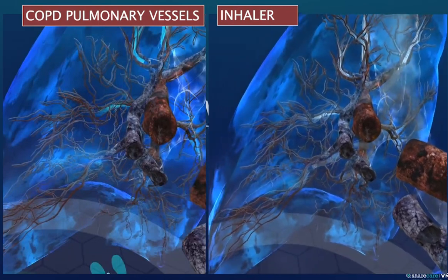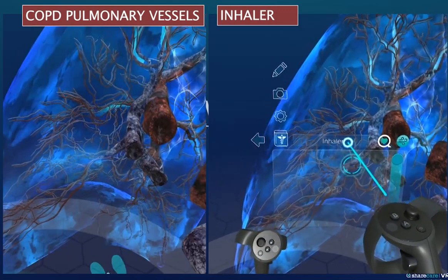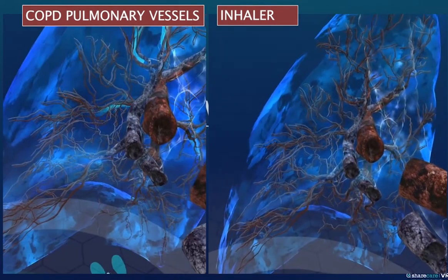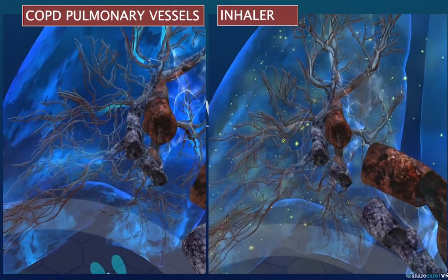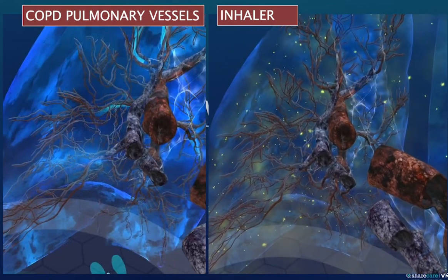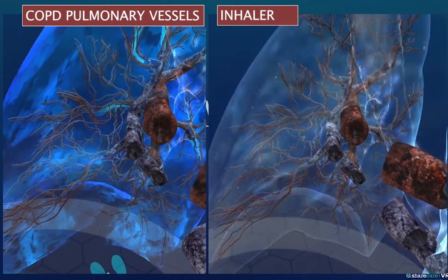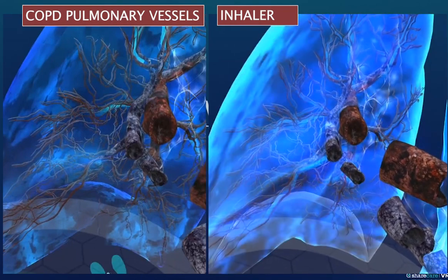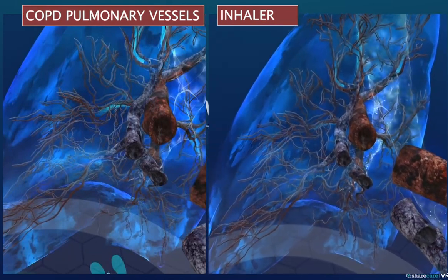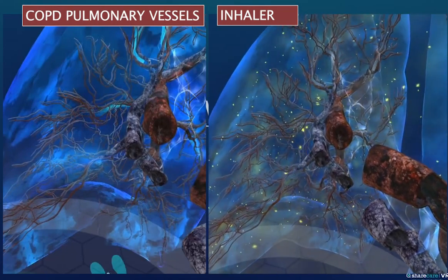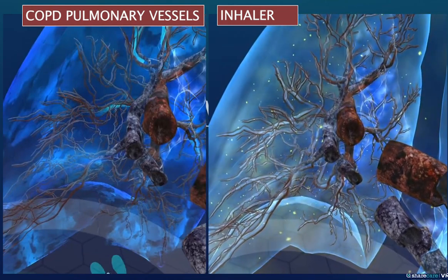Moving on to look at the effects an inhaler might have on the macroscopic anatomy and physiological processes associated with gas exchange and airflow: in many patients with COPD pharmacological therapy is required. Individual or combined therapies can be delivered via an inhaler. Specifically, bronchodilators relax the muscles around the airways, helping to open the airways and making breathing easier by decreasing airflow resistance, which increases airflow and decreases dynamic hyperinflation.